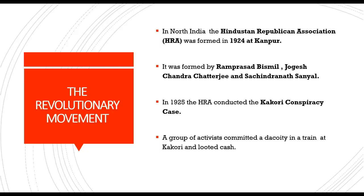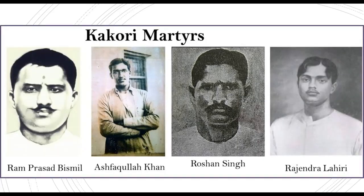In 1925, the Hindustan Republican Association conducted the Kakori Conspiracy — a group of activists committed a dacoity in a train at Kakori and looted cash. Ram Prasad Bismil, Roshan Lal, Ashfaqullah Khan, and Rajendra Lahiri — four of the 29 persons — were hanged. The suppression of the revolutionaries led to the weakening of the Hindustan Republican Association.